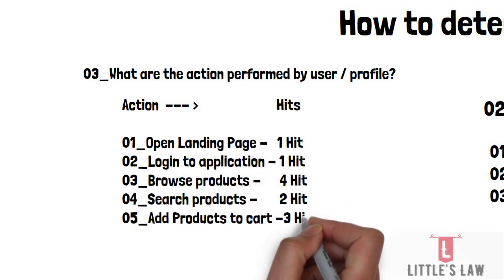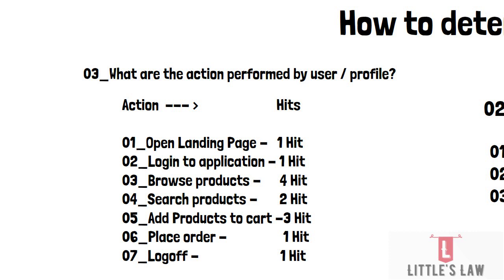The user actions for each profile should be relatively obvious based on the use cases used to design the application. Some steps may be performed more than once, and such statistics can be approximated from user modeling or server logs. For example, if on average each user purchases three products per session, the breakdown would be: connect to home page once, log on, browse four products, search for two products, add three items to cart, validate, place order, and log out.